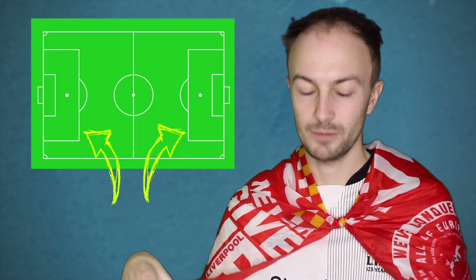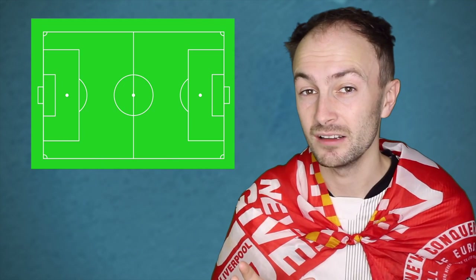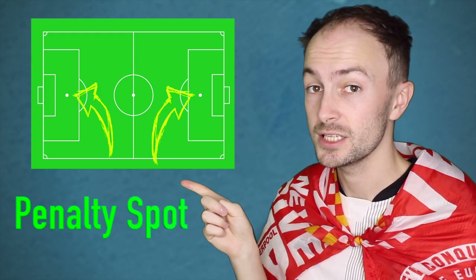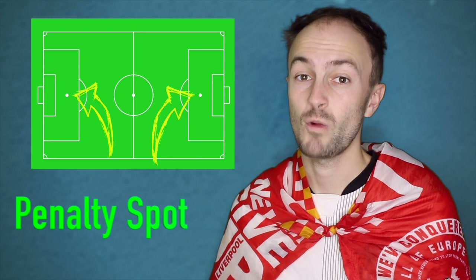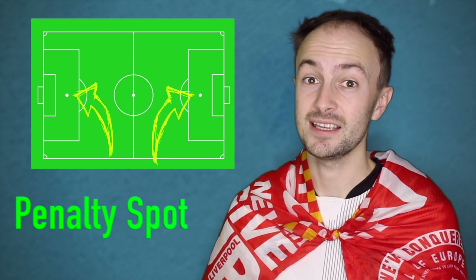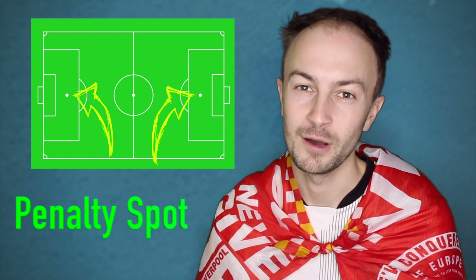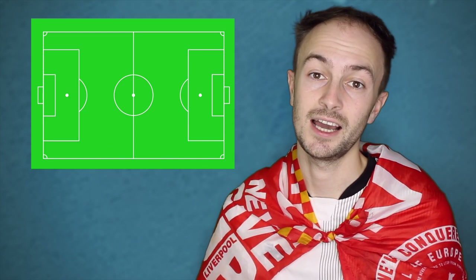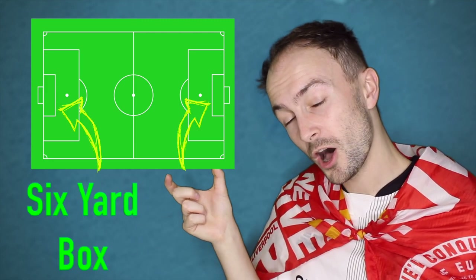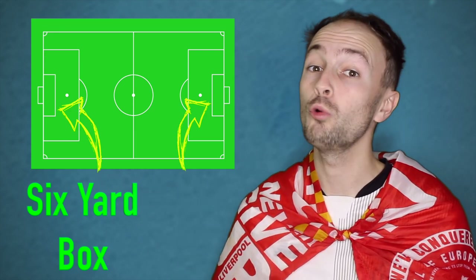Both goals are surrounded by the penalty box. Inside the penalty box there are two very important things. There is the penalty spot — that is where penalty kicks are taken. So if your team is given a penalty, that means you kick the ball from that spot. And the second thing inside the penalty box is the six-yard box, which is where the goalkeeper can take his goal kicks from.